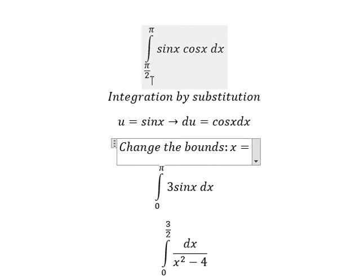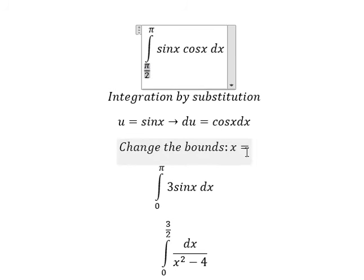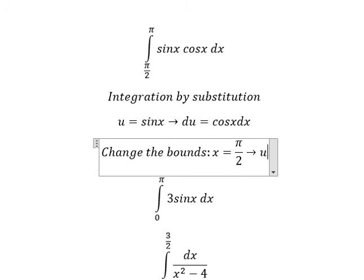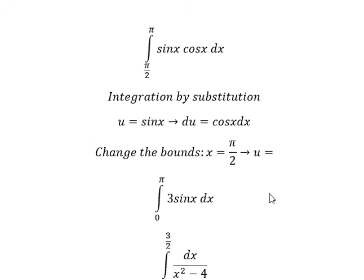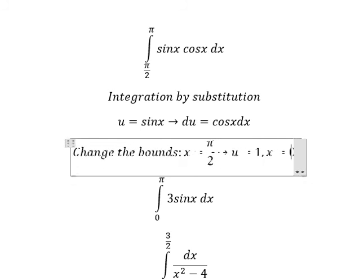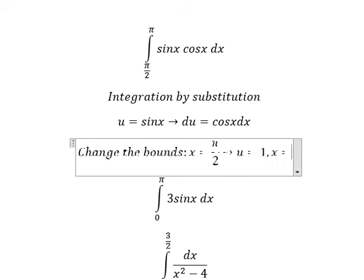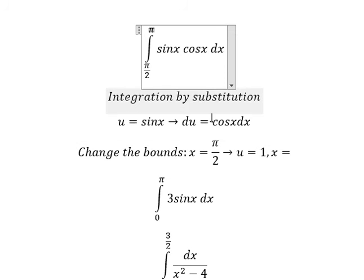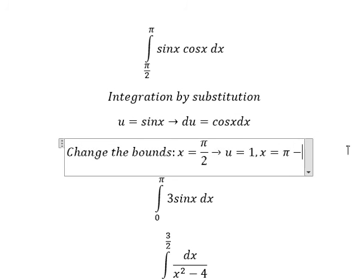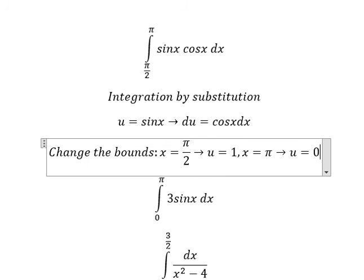When x equals π over 2, I will put π over 2 here, so u equals number 1. When x equals π, we put π here — sorry, that's π not 0. When x equals π, we put π here, so u equals number 0.